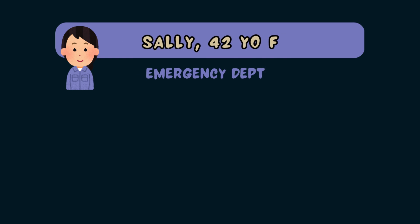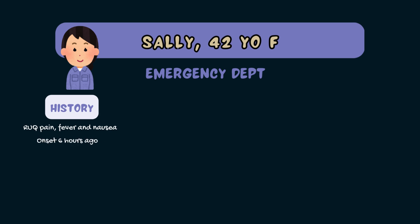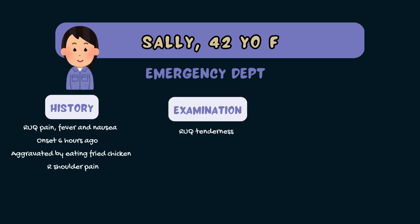You are working in the emergency department and your next patient is Sally, a 42-year-old female who presents with right upper quadrant pain, fever and nausea for the past six hours. She tells you her pain is worse after eating fried chicken and she's also experiencing some pain in her right shoulder. On examination, she has right upper quadrant tenderness and she has a positive Murphy's sign.